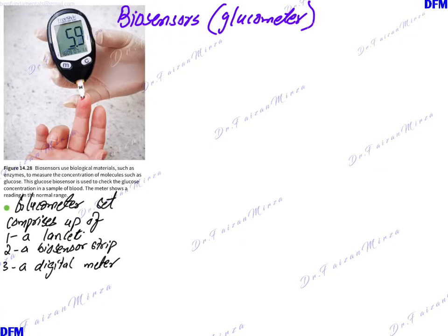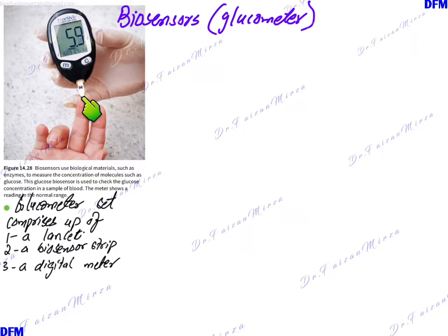Dipsticks are still used but are not as common anymore, because now we have biosensors. Biosensors include the glucometer, which most of you may already know. This is the digital meter with a set of buttons, and this is the strip, which has an enzyme immobilized on it. You prick your finger, allow a blood drop to come out, and the blood drop travels into the strip through capillarity, reacts with the enzyme, and a digital reading is displayed in milligrams per deciliter.